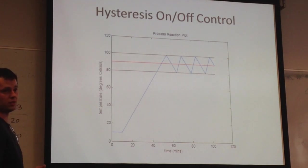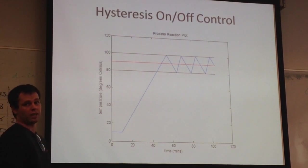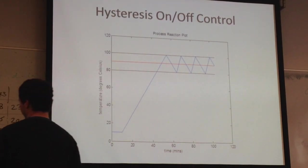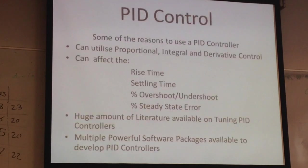And that gives you an error of close to minus 10%. So with a process like that, like in the pharmaceutical industry, that's just not good enough. So we use a PID controller. Some reasons you use a PID controller: we can utilize proportional integral derivative control.